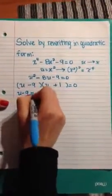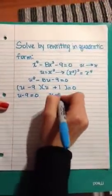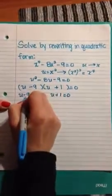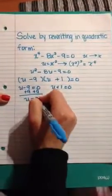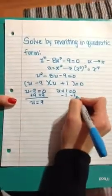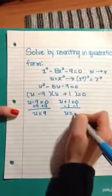So we have u minus 9 equals 0 and u plus 1 equals 0. When you add 9 to each side over here, you'll get u equals 9. And when you subtract 1 over here, you will get u equals negative 1.